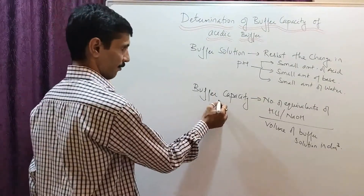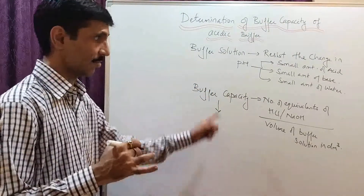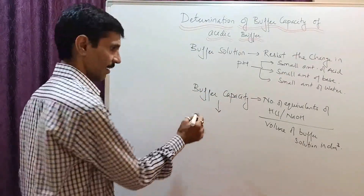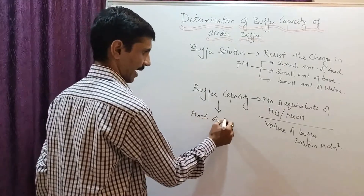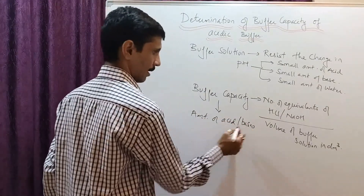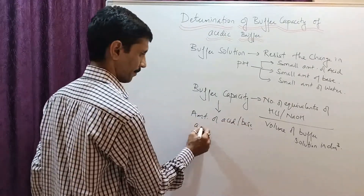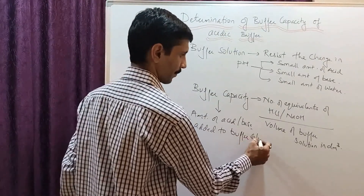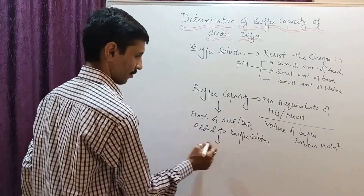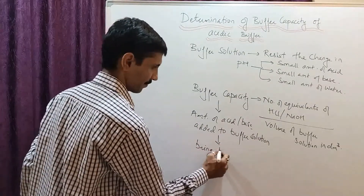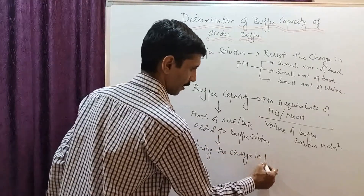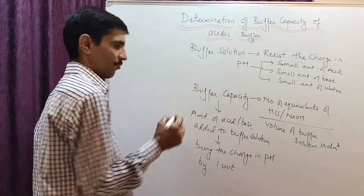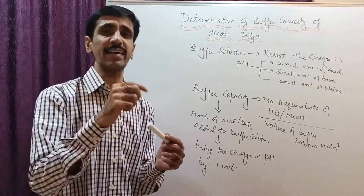In theoretical terms, the definition of buffer capacity is the amount of acid or base added to the buffer solution to bring about a change in pH by one unit.